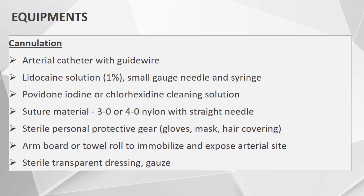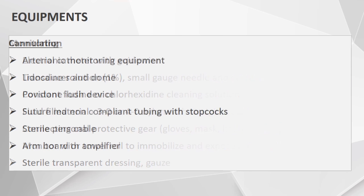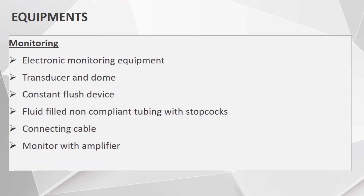The cannulation equipment includes the arterial catheter with guide wire, lidocaine solution with a small gauge needle and syringe for local anesthesia, and povidone-iodine or chlorhexidine cleaning solution. Suture material can be 3-0 or 4-0 nylon with a straight needle. Also needed are sterile personal protective gear including gloves, mask, and hair covering, an armboard or towel roll to immobilize and expose the arterial site, sterile transparent dressing, and gauze. The monitoring equipment includes the electronic monitoring equipment, transducer and dome, constant flush device, fluid-filled non-compliant tubing with stopcocks, connecting cable, and monitor with amplifier.